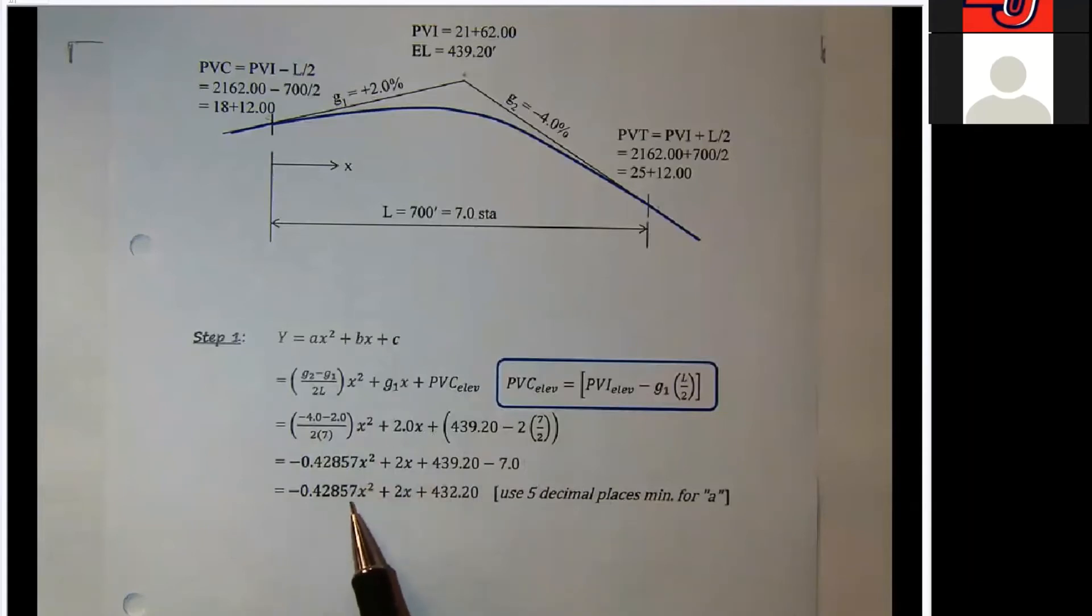There's a couple things that are important to pay attention to. The coefficient of A, you really need to keep at 5 decimals in order to get the sort of accuracy that you need in your calculations. And then the other thing is, you'll notice that I automatically end up with a negative here.